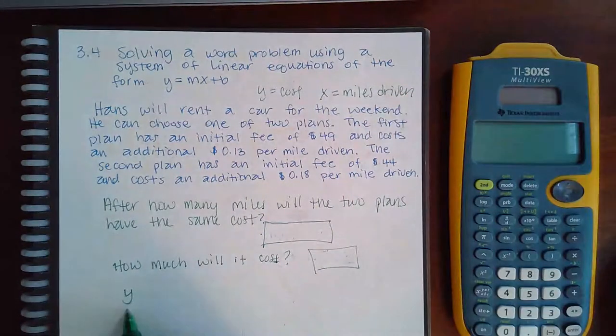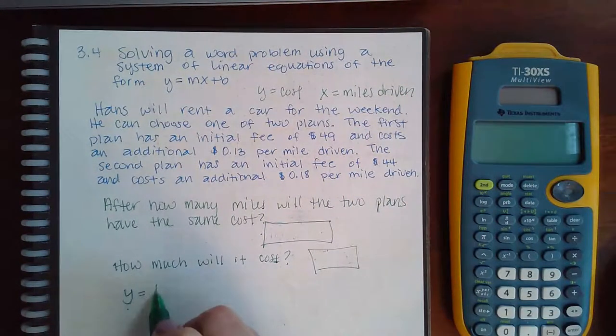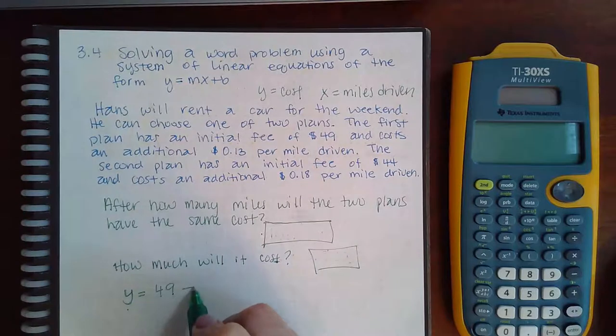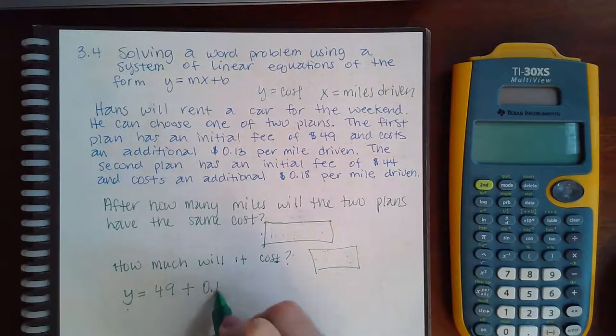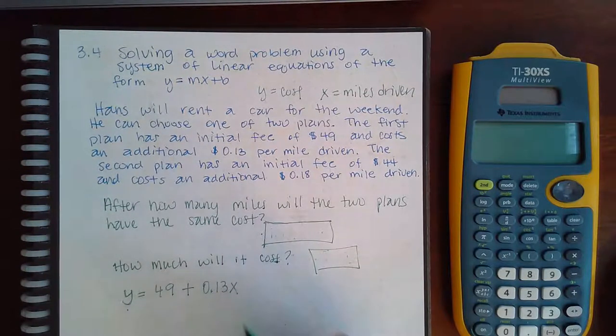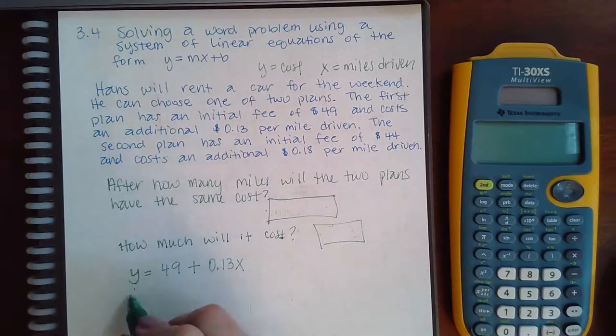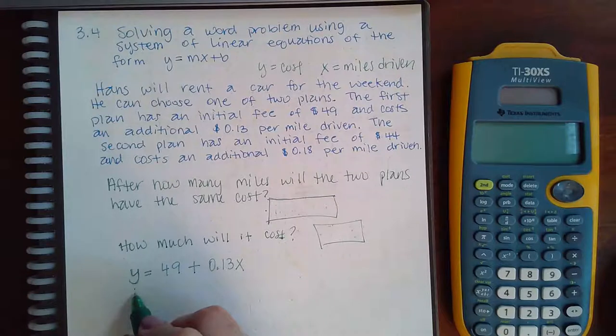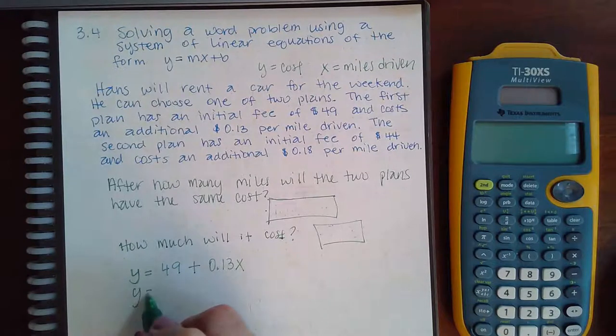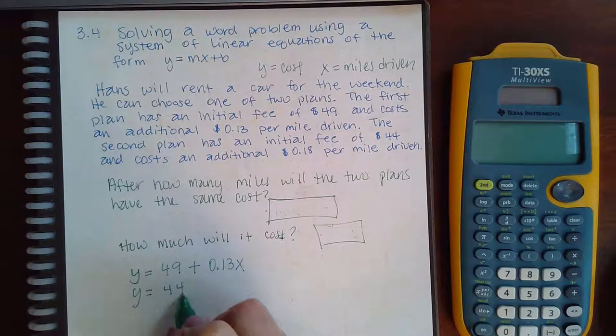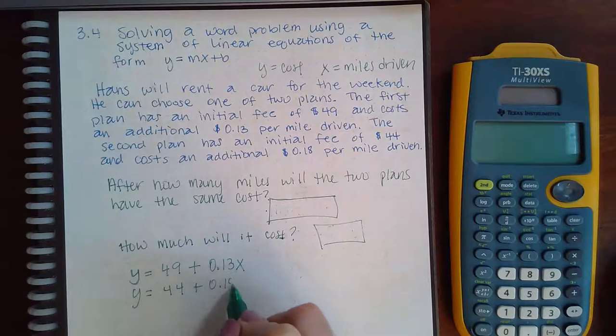So y is the cost and that will equal 49 plus an additional 13 cents per mile, which means I have to multiply by the miles. The second equation comes from the second plan and that is the cost equals 44 plus 18 cents per mile.